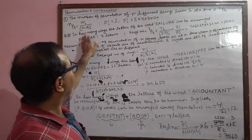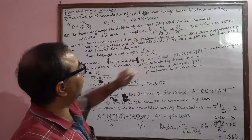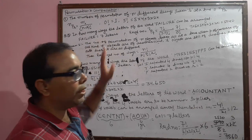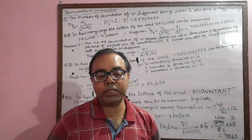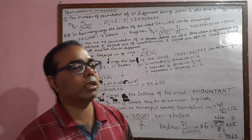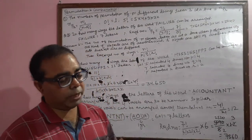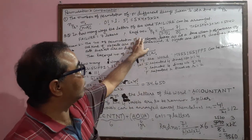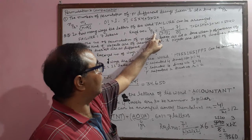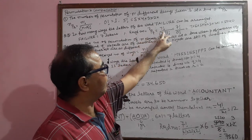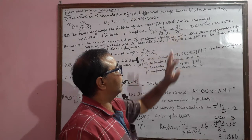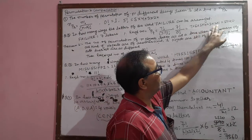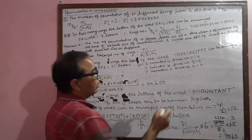First question: in how many ways can the letters of the word FAILURE be arranged? In FAILURE, there are seven distinct letters with no letter repeated. We have to make words using all seven letters together. So required number of ways = 7P7 = seven factorial divided by (seven minus seven) = zero factorial = one. Seven factorial equals 5040. So the answer is 5040.